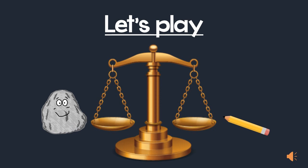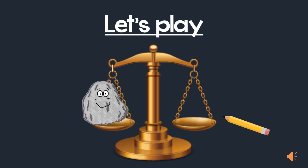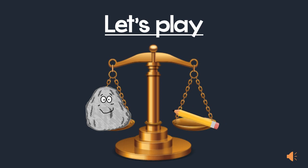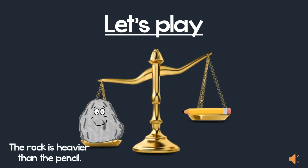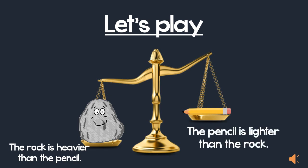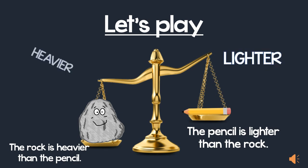Now let's play a little bit with our balance. I have a balance, a rock, and a pencil. I'm going to place my rock on the left pan and the pencil on the right pan — which pan do you think will move down and which one will move up? The rock is heavier than the pencil, so its pan moved down. The pencil is lighter than the rock, so its pan moved up. The important words we need to know here are lighter and heavier.